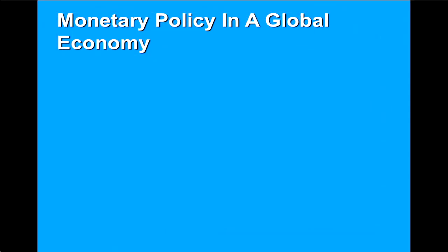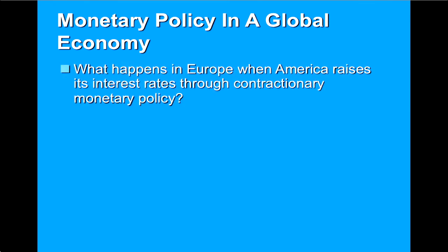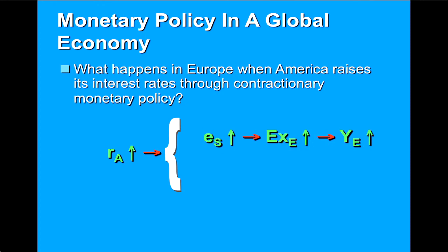Now let's look at the impact of domestic monetary policy on the global economy. Specifically, let's consider what happens in Europe when America raises its interest rates through contractionary monetary policy, as illustrated in this figure. As America's interest rate, RA, rises, investors sell European financial assets and buy American financial assets. This leads to an appreciation of the dollar, ES, and a depreciation of European currencies. This, in turn, increases Europe's net exports, EXE, and thereby raises European output and income, YE.